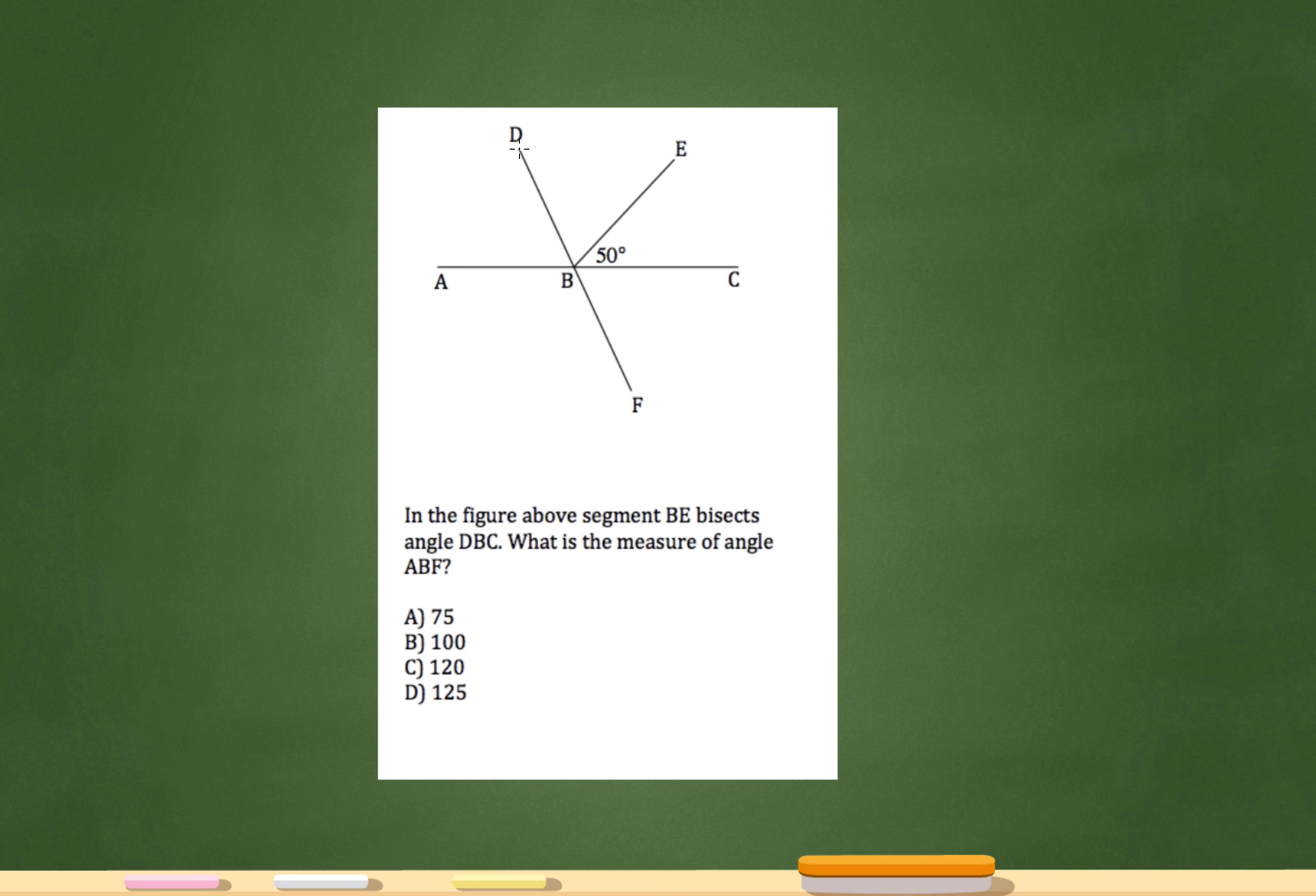So let me bring a different color pen out here. See how it's saying this angle DBC right here? And it's saying BE bisects it, so that means BE cuts it in half. So if this is 50, that means that this one right here must be 50 degrees as well.